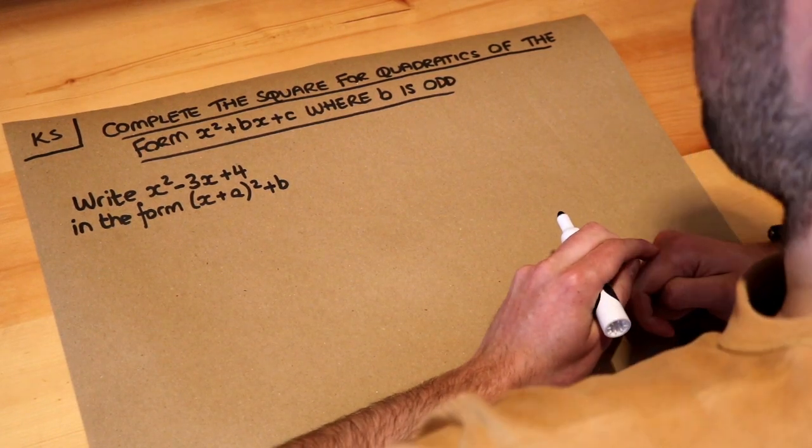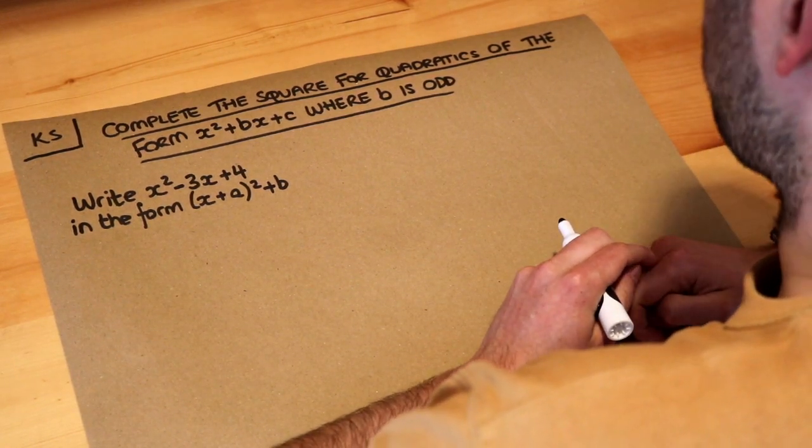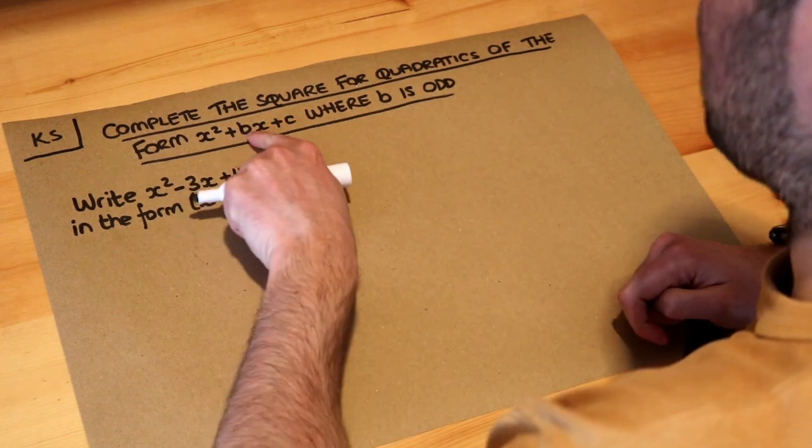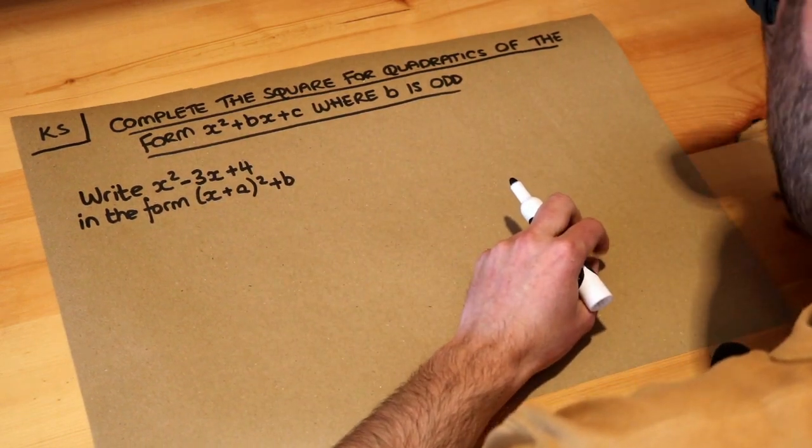Hello and welcome to this Dr Ross Mass's key skill video on completing the square for quadratics of the form x squared plus bx plus c where b is odd.